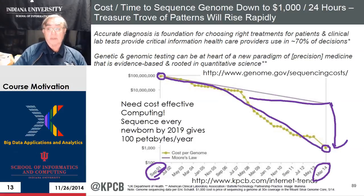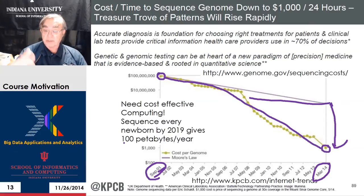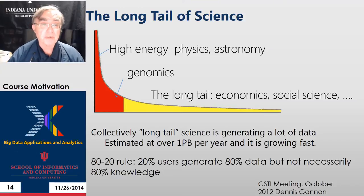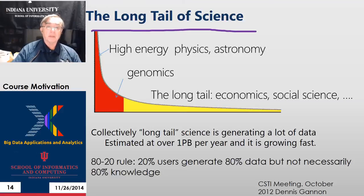This is going to lead to 100 petabytes or so per year if, for instance, you decided to sequence everybody. Here's an interesting curve highlighting an important issue: the long tail of science.